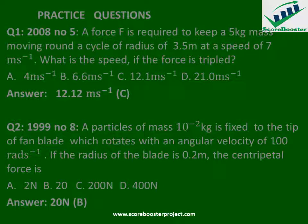Now, on to practice questions. The first comes from 2008, number 5. A force F is required to keep a 5 kg mass moving around a circle of radius 3.5 meters at a speed of 7 meters per second. What is the speed if the force is tripled? The correct answer is 12.12 meters per second, which approximates to 12.1 meters per second, making option C the correct answer.